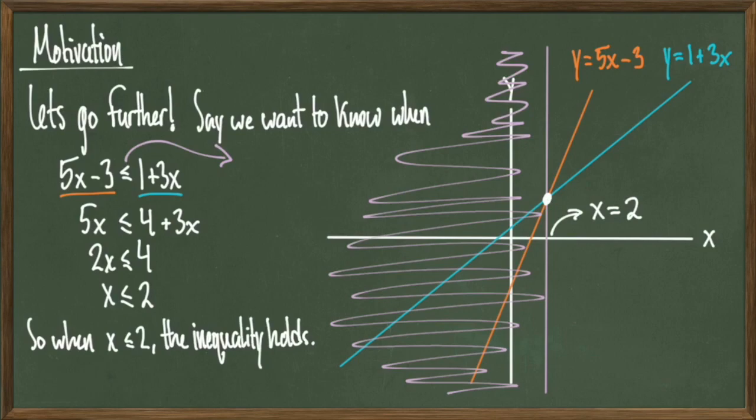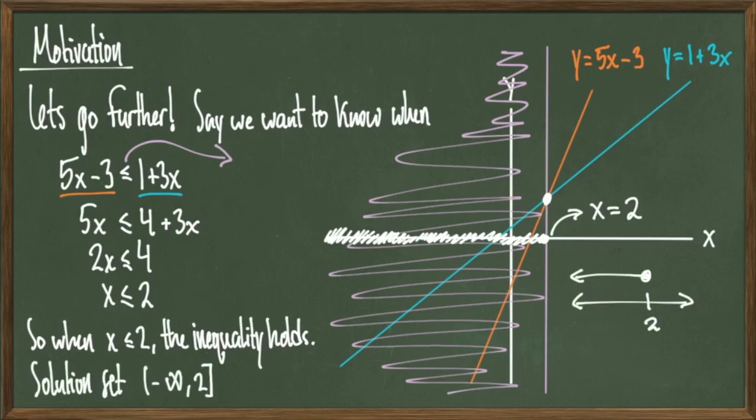It looks like the region of the x-axis that shows 5x minus 3 being less than or equal to 1 plus 3x is actually the portion of all numbers on the x-axis that are less than or equal to 2. I'll go ahead and shade it in here. So it's this area of the x-axis that I care about. So it means that my solution set would be all values of x less than or equal to 2. And this is written as the interval from negative infinity to 2 closed at 2.